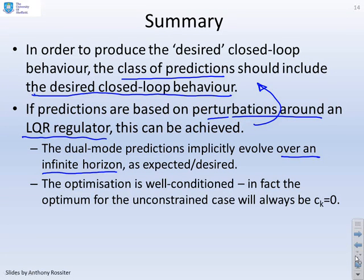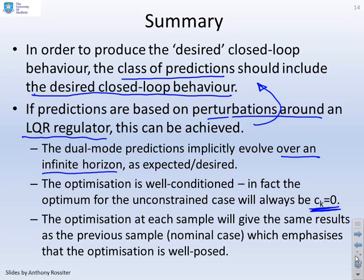The optimization is now well conditioned. In fact, the optimum for the unconstrained case will always be c_k equals zero. The optimization at each sample will also give the same results as the previous sample in the nominal case, which emphasizes that the optimization is well posed. This means you will not keep changing your mind. If you look back at GPC, it chose an optimum trajectory now and then at the next sample you ended up with a different optimum trajectory. So you kept changing your mind. With this OMPC approach, whatever decisions you take now, when you get to the next sample, it will give you the same decision again in the nominal case. You've got a well posed optimization.